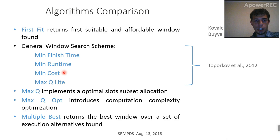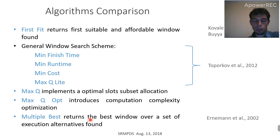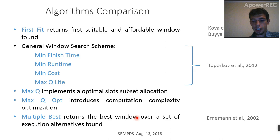Next are two algorithms introduced in this talk: MaxQ, which implements optimal slot subset allocation, and MaxQopt, which introduces the same algorithm but with a computation-reusing heuristic. We also introduce a multiple-best heuristic, which calls the first-fit algorithm multiple times and among these alternatives returns the best according to the criterion considered. All these prior algorithms were published some time ago.